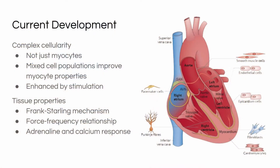Since tissue is defined as a group of cells with similar structure and function, cardiac tissue is also comprised of many cell types. Therefore, any tissue engineering technique must mimic this cellular variety. Current studies into engineered heart tissue have shown that populations of many cell types, rather than just myocytes, have shown improved organelle development and increased survival, contractility, and organisation of the all-important myocytes.